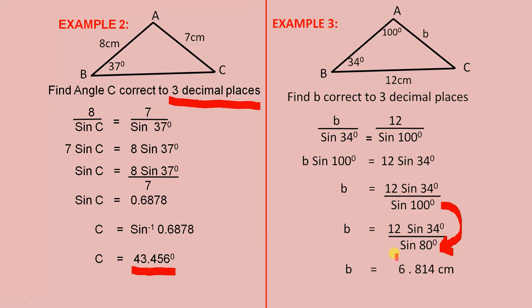Put this information into the calculator, and it gives us b equals 6.814 cm, correct to three decimal places.